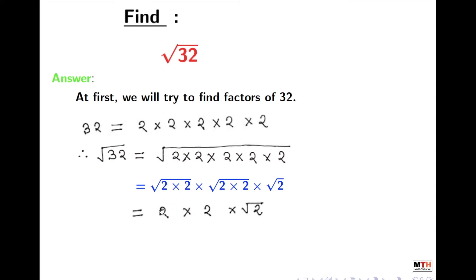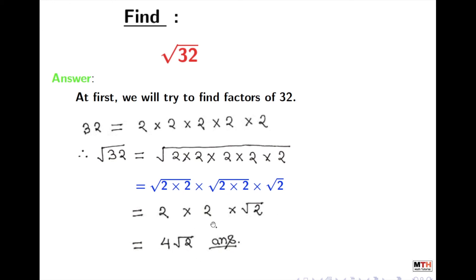From the first square root we get 2, and from the second square root we also get 2. The remaining square root of 2 stays the same, so we get 2 times 2 times square root of 2, which means we get 4 root 2. And this is the answer of square root of 32.